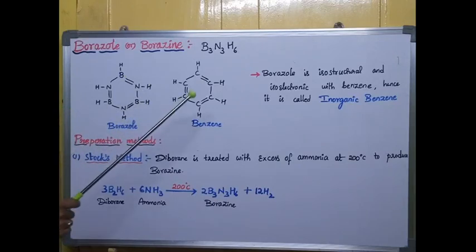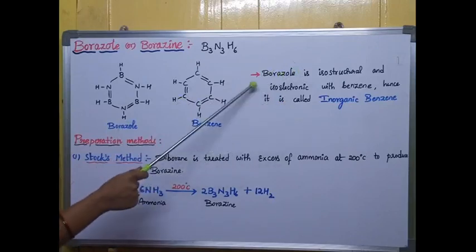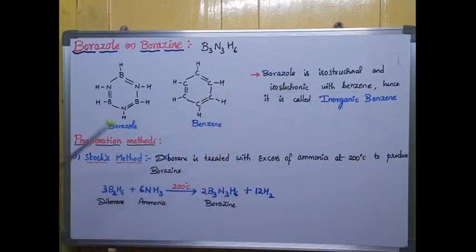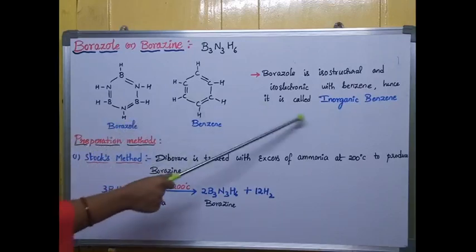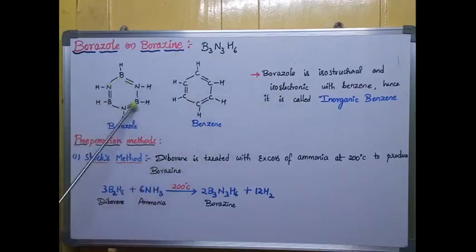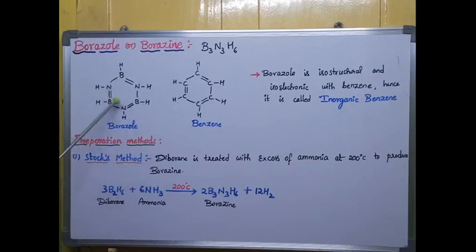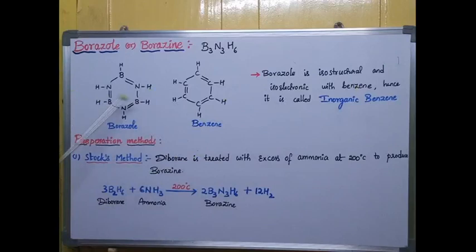As borazole exhibits isostructural and isoelectronic nature with benzene, it is called inorganic benzene. It is similar to benzene but does not consist of carbon. Organic compounds are compounds which consist of carbon as a main element, but inside borazole we cannot observe any carbon element. Hence we call it inorganic benzene, not organic benzene. This is the introduction part of borazine or borazole.